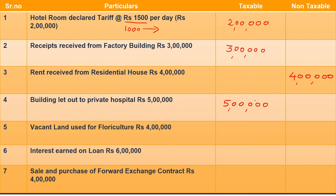Point 5: vacant land used for floriculture. I told you — animal husbandry, horticulture, and floriculture (AHF) — remember these three things. In all three cases it will be exempt, no GST will be levied, so it becomes non-taxable.